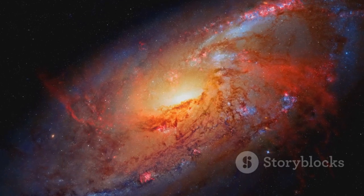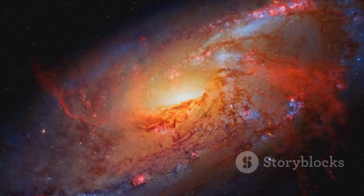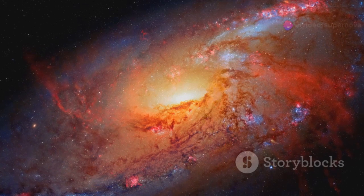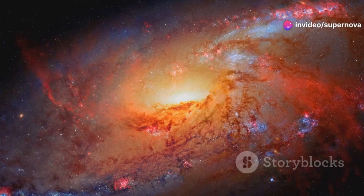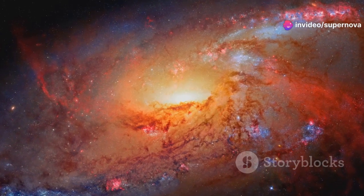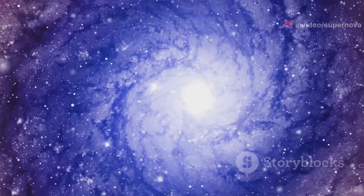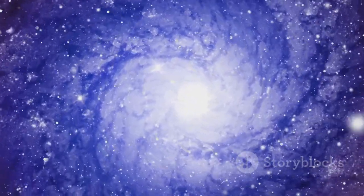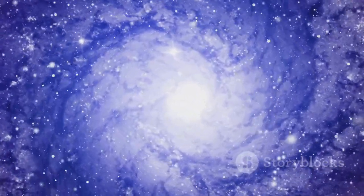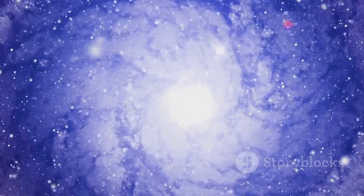Also known as Messier 74, this grand design spiral galaxy is a sight to behold, and JWST has unveiled its secrets in stunning detail. Spiral galaxies like the Phantom Galaxy are graceful structures, with arms of gas and dust spiraling outward from a central bulge.